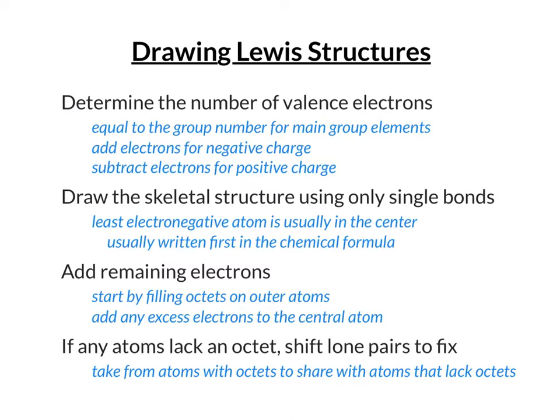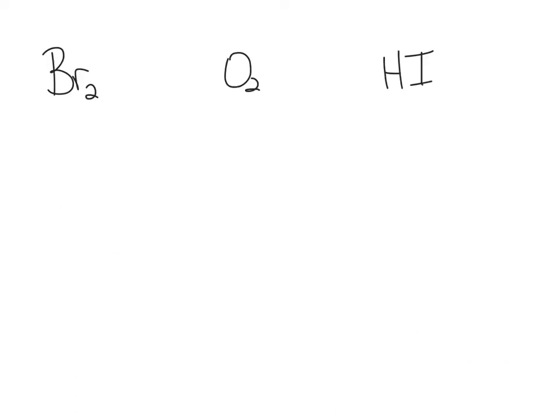Once done, you should have a valid Lewis structure. It may not be the most stable structure, but it will be valid and you can use it to predict shapes, bond angles, and polarity — which is our ultimate goal. We're going to start off with some examples of diatomic molecules, beginning with step one: counting valence electrons.